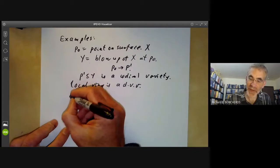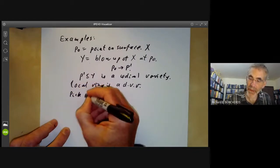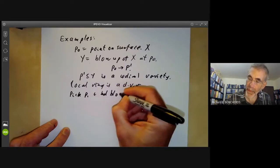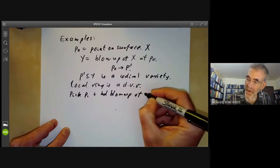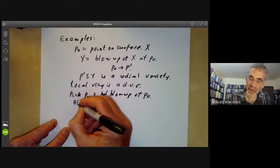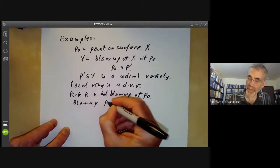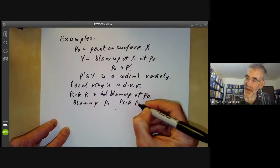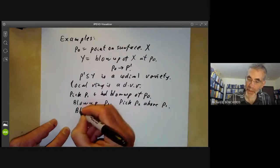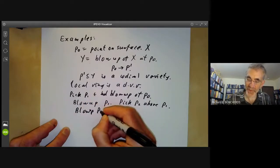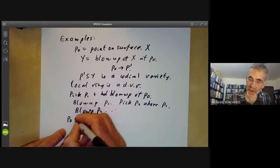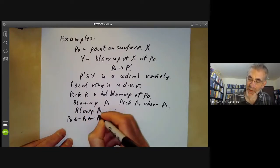What we're going to do is pick P1 in the blow up of P_0. So this is another point here. And then we're going to blow up P1. And then we're going to pick P2 above P1 and blow up P2. And we sort of continue like this. So we get a whole series of points, P_0, P1, P2, and so on.